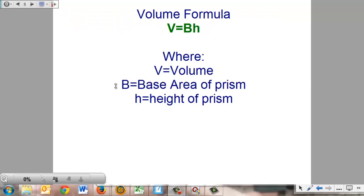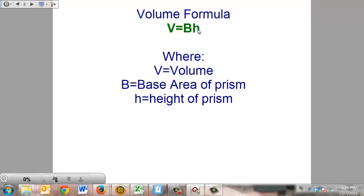The volume formula that we're going to use is V equals Bh, where capital V is volume, capital B is base area, and lowercase h is the height of the prism. So you would read this properly as volume equals base area times height. When I ask you what the formula is, I don't want to hear V equals Bh. I want to hear the proper terms: volume equals base area times height.